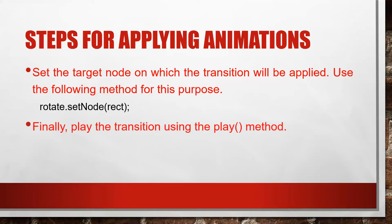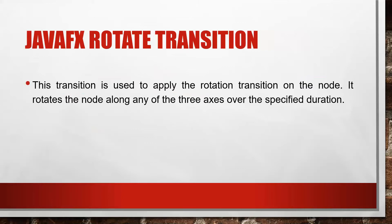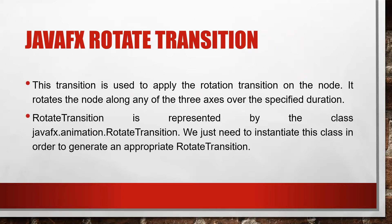The last step is to play the transition using the play() method. Regarding the RotateTransition class: this transition is used to apply rotation on a node, rotating it along any of the three axes over a specified duration. RotateTransition is a class under the JavaFX.animation library, and rotation transition duration refers to the specific count of the animation.